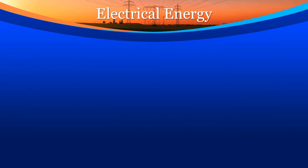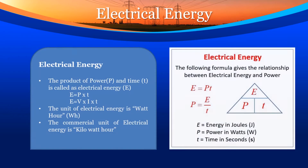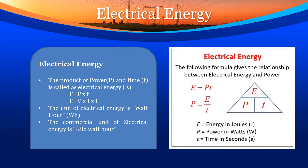Electrical energy. The product of power p and time t is called electrical energy e. E is equal to p into t, and E is equal to V into i into t. The unit of electrical energy is watt-hour (Wh). The commercial unit of electrical energy is kilowatt-hour (kWh).